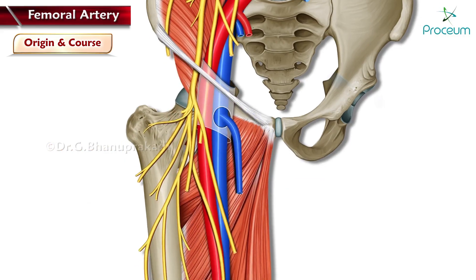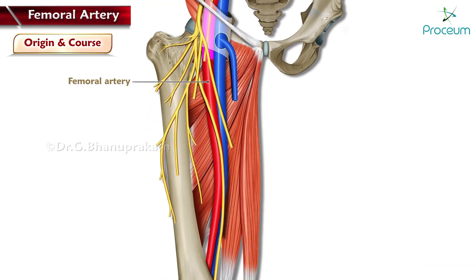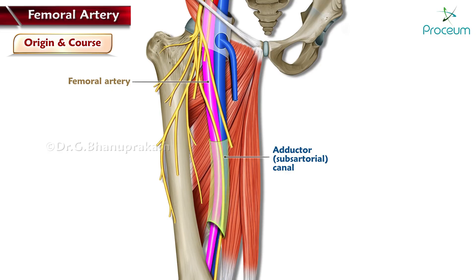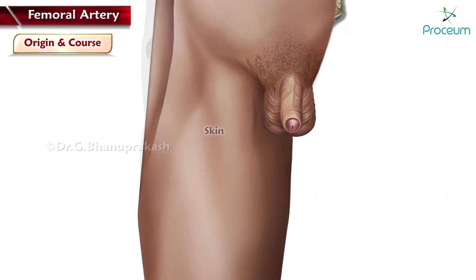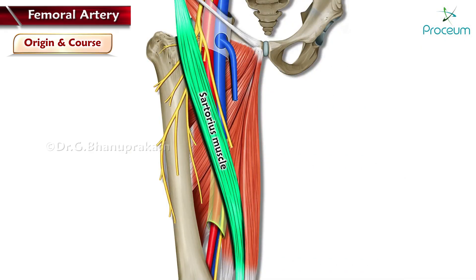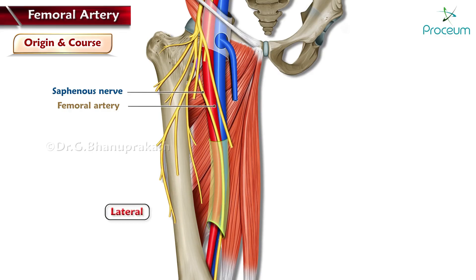The artery then travels down the anteromedial aspect of the thigh before passing through the adductor (subsartorial) canal. When the femoral artery passes through the adductor hiatus, it continues as the popliteal artery. Within the adductor canal, the femoral artery is located deep to the following structures: skin, superficial fascia, deep fascia, and the sartorius muscle.